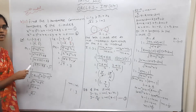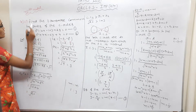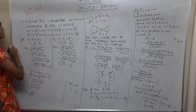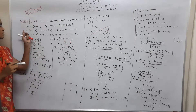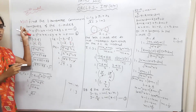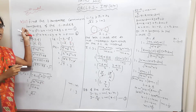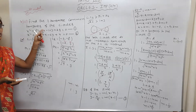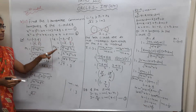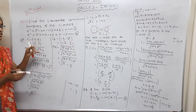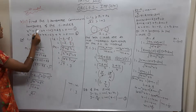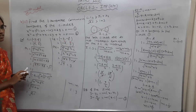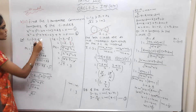Welcome to Sikshya Maths Academy. This is the fourth model, third sum. Yesterday we covered the third and fourth model — circles that touch each other at a point of contact with a common tangent. Next, we are going to find the transverse common tangent to two circles.